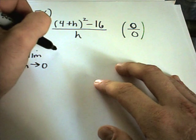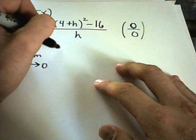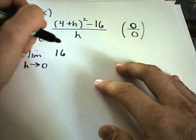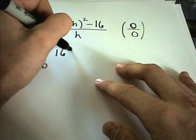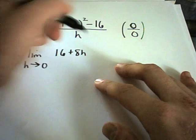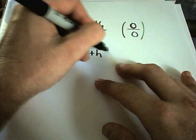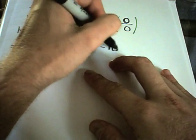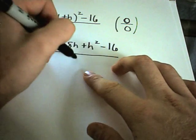Remember this is 4 plus h times 4 plus h. So we'll get 16 plus 4h plus 4h, that'll give us plus 8h, plus h squared, minus 16, all over h.